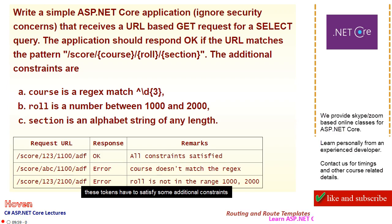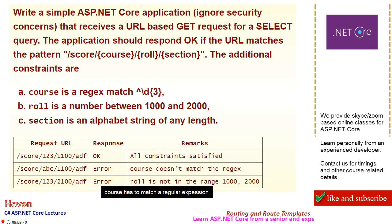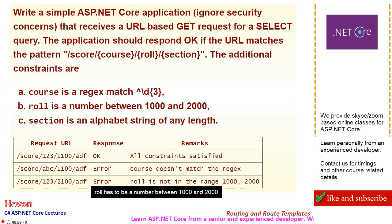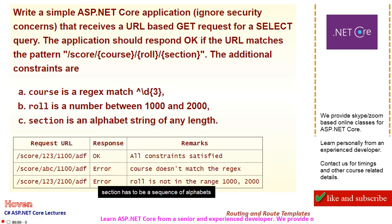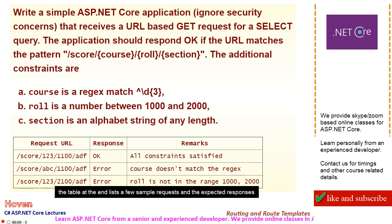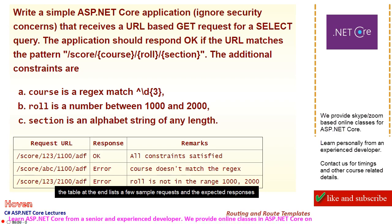These tokens have to satisfy some additional constraints. Course has to match a regular expression. Role has to be a number between 1000 and 2000. Section has to be a sequence of alphabets. The table at the end lists a few sample requests and the expected responses.